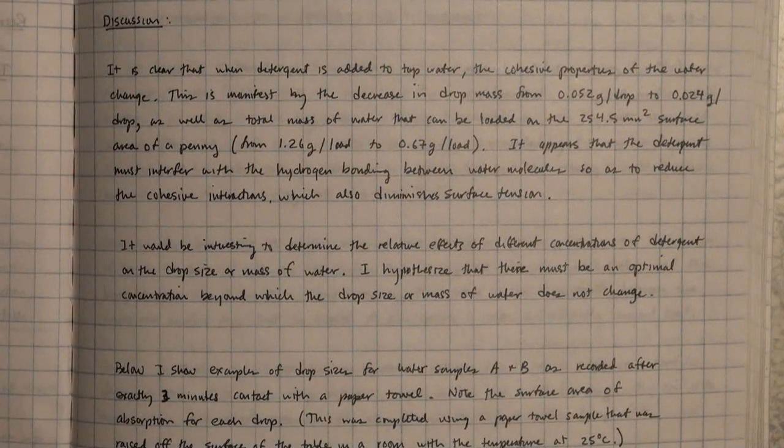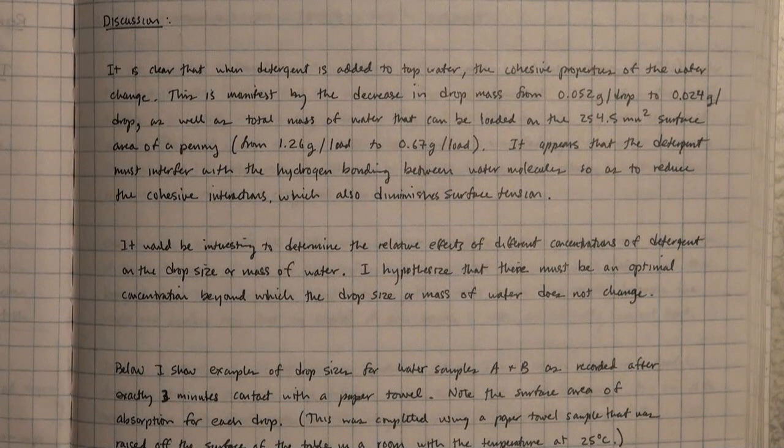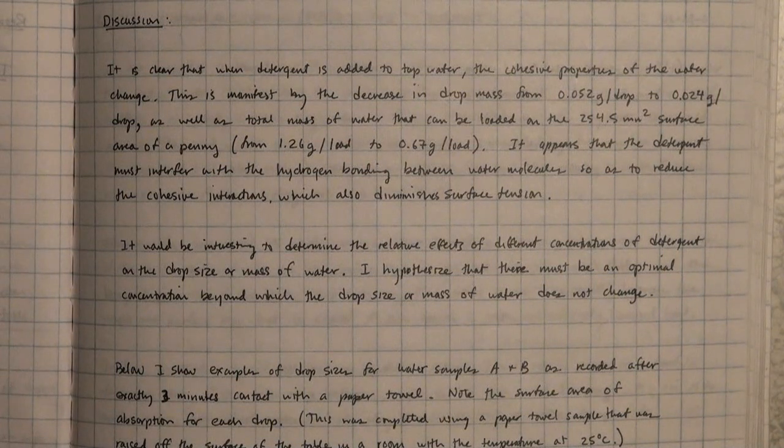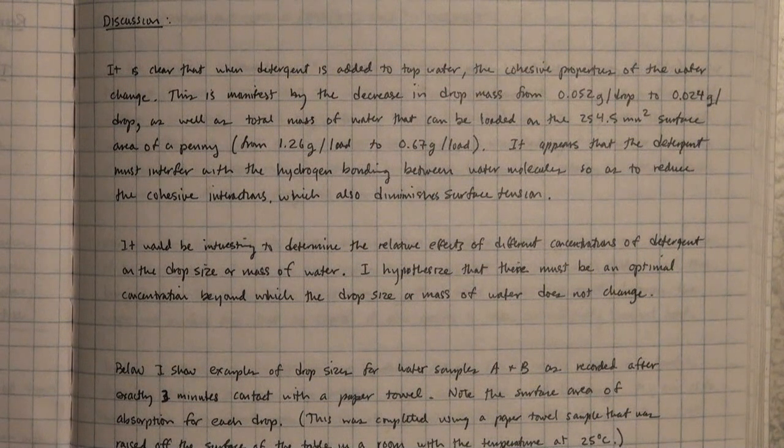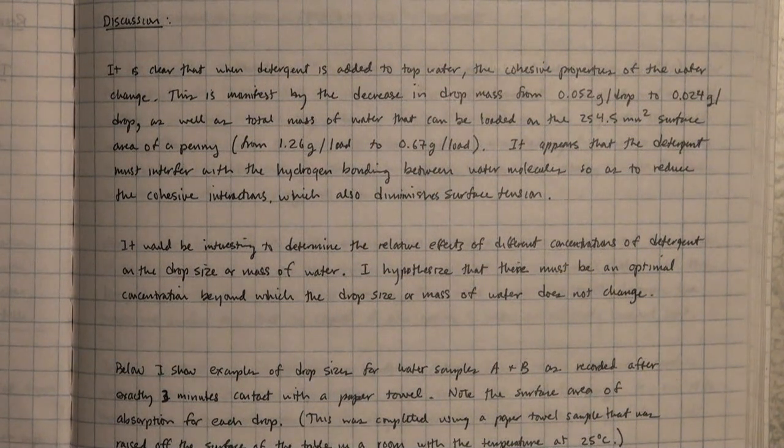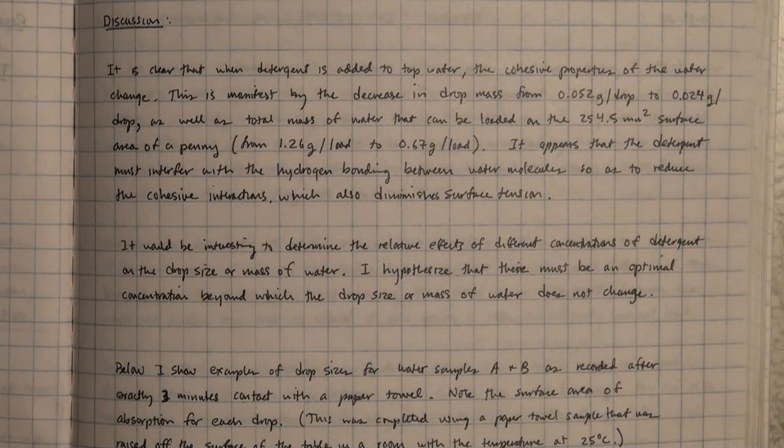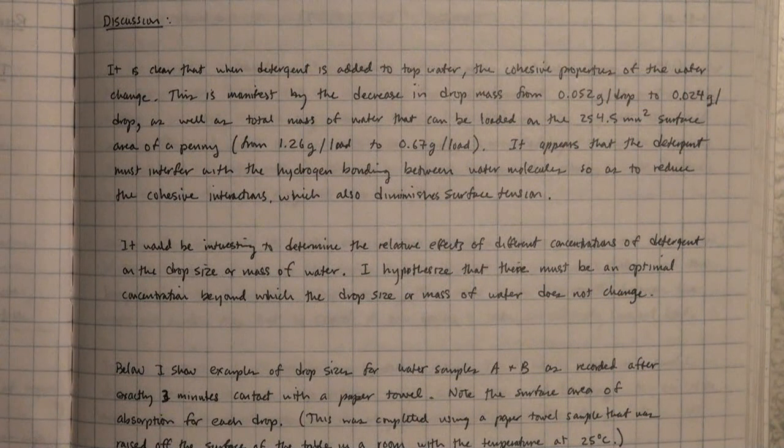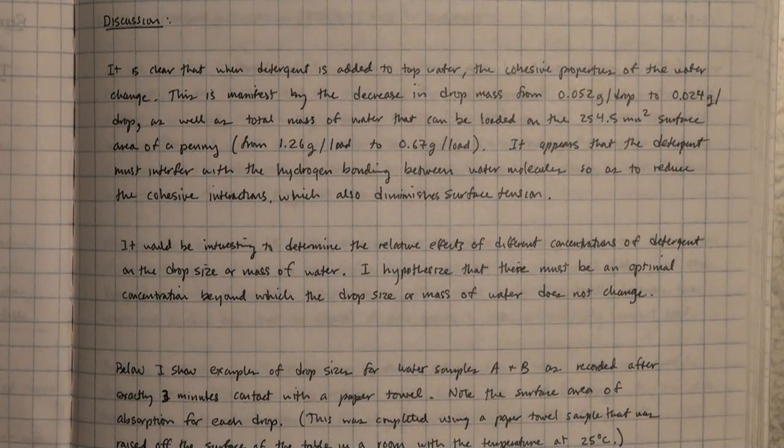In my discussion, it is clear that when detergent is added to water, the cohesive properties of the water actually change. This is manifest by the decrease in drop mass from 0.52 to 0.24 grams per drop, as well as the total mass of water that can be loaded onto the surface area of a penny.